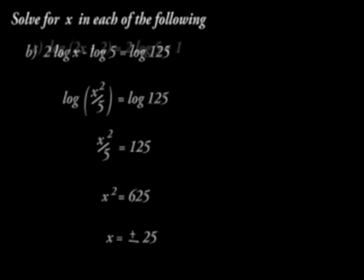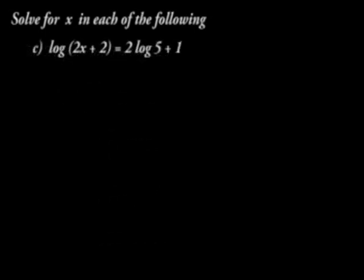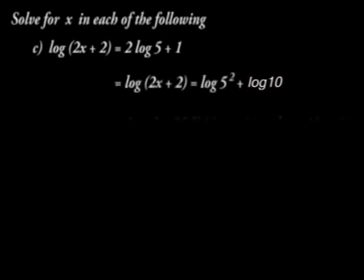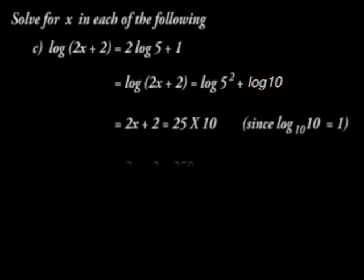For c, log into 2x plus 2 is equal to 2 log 5 plus 1 means that log into 2x plus 2 is equal to log 5 squared plus 10. 10 is written because log to base 10 of 10 is 1. Therefore, we shall have 2x plus 2 is equal to 25 times 10 when we ignore the logs. If we solve that, x will be equal to 124.